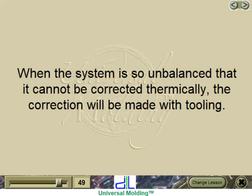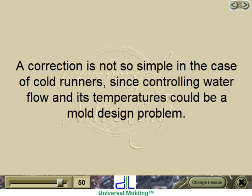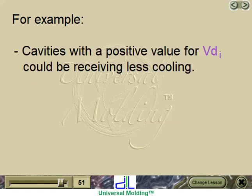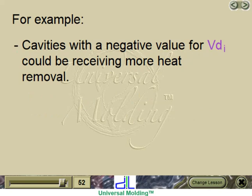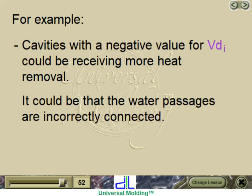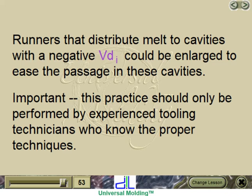When the system is so unbalanced that it cannot be corrected thermally, the correction will be made with tooling. For cold runners, controlling water flow and temperatures could be a mold design problem. Cavities with positive deviation may be receiving less cooling or have an obstruction in water passages. Cavities with negative deviation may be receiving more heat removal or have incorrectly connected water passages. Runners distributing melt to cavities with negative deviation could be enlarged to ease passage — but this should only be performed by experienced tooling technicians.